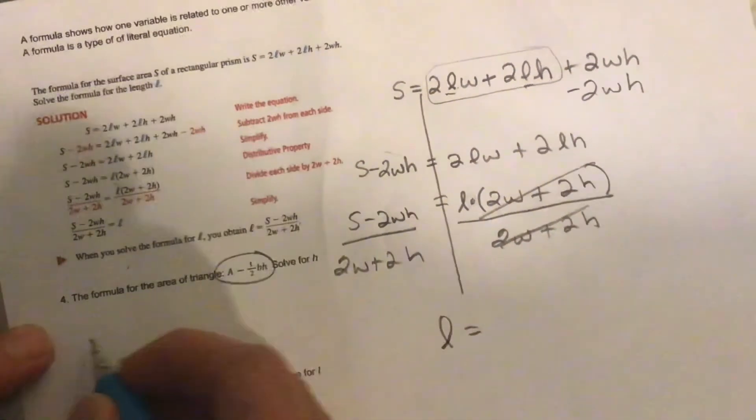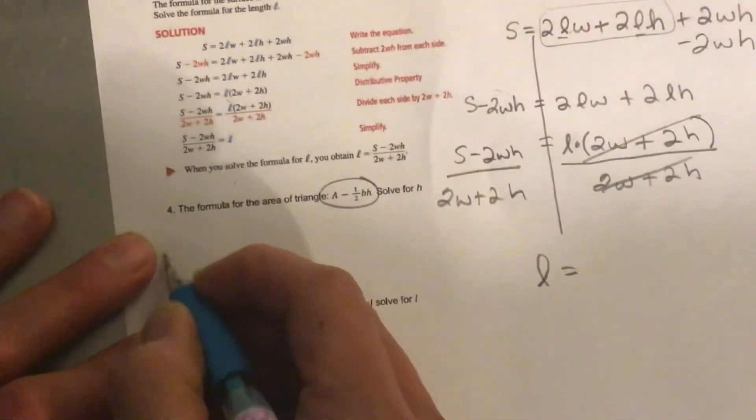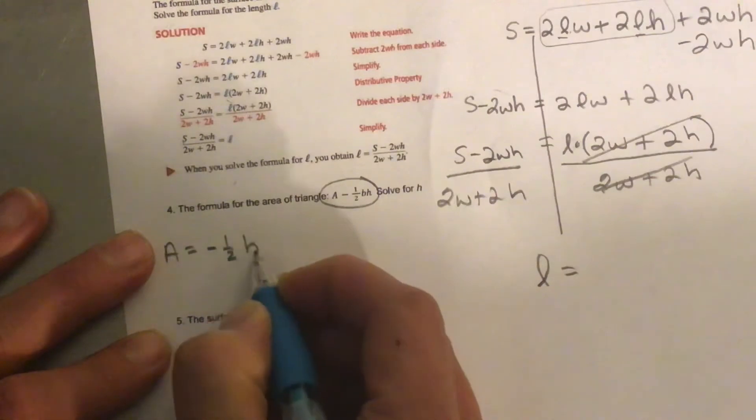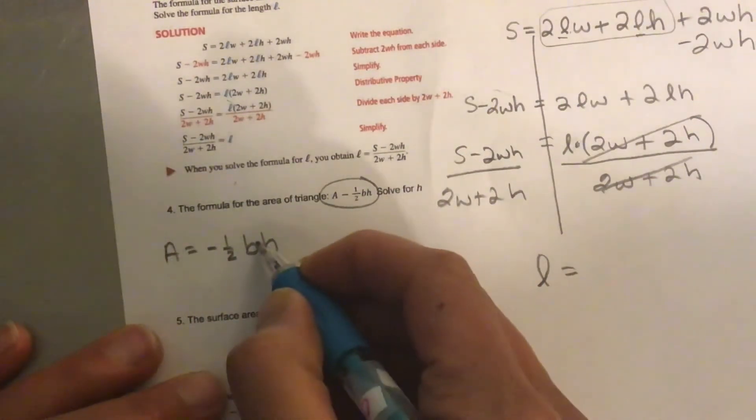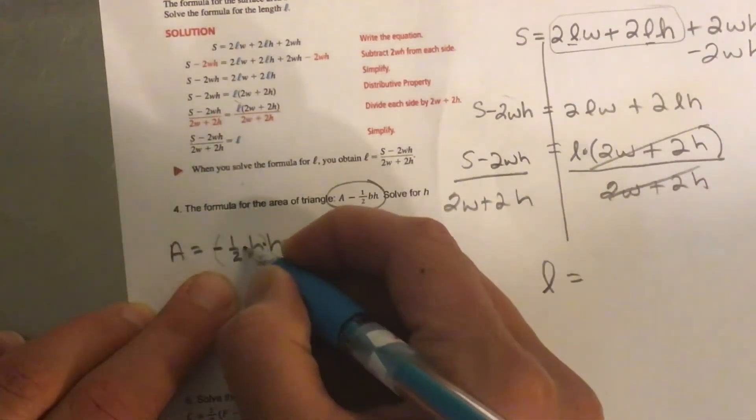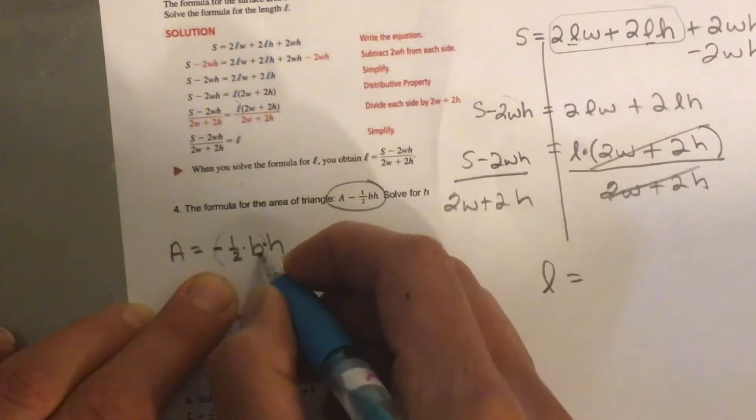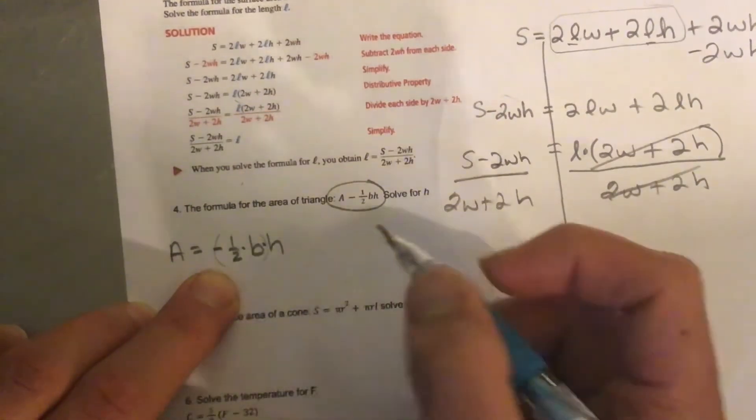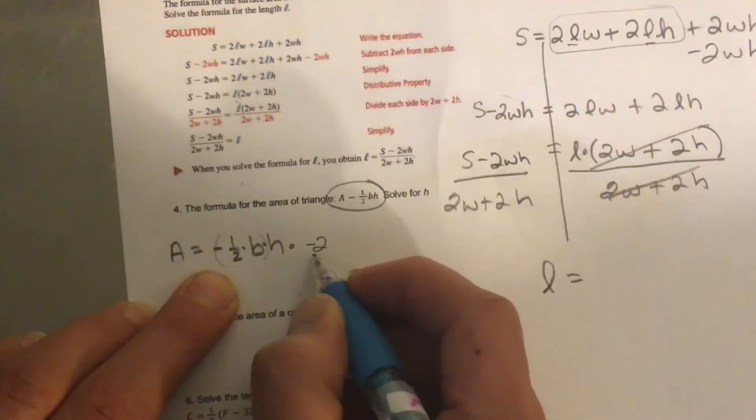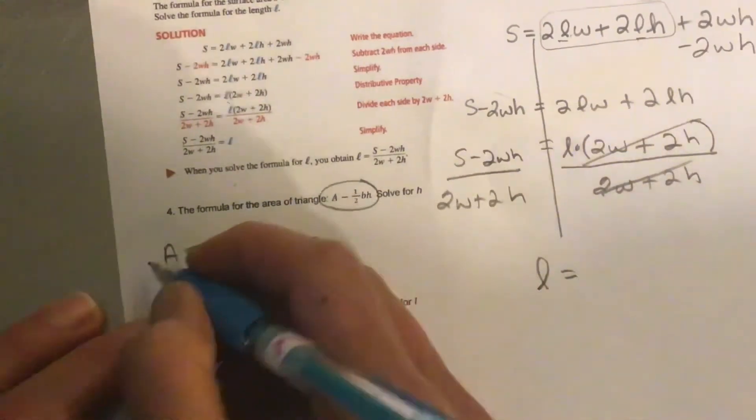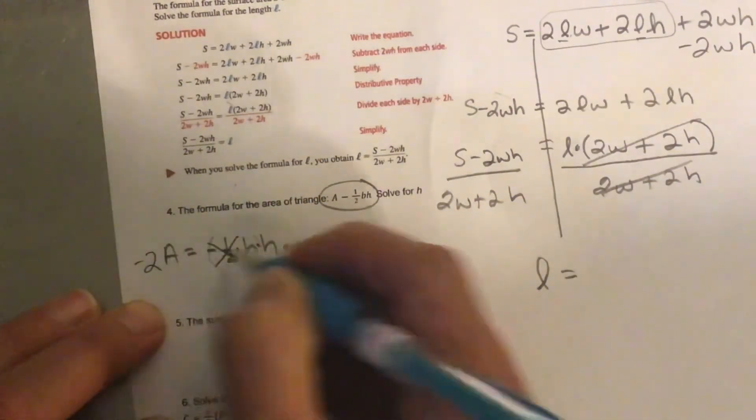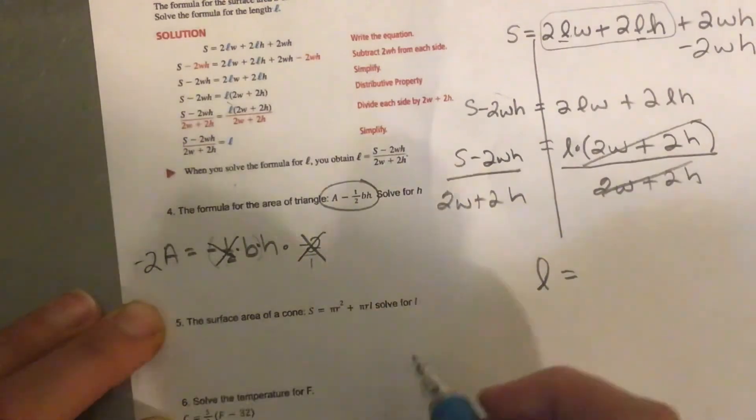All right. So we want to solve for H here. I'm going to make it a little bigger. A equals negative 1 half base times height. So height's not alone, but I can't really move those together because of that fraction. So we're multiplying because the opposite of multiplying B is dividing, but the opposite of multiplying a fraction is multiplying by the reciprocal. So negative 2 over 1, which is just negative 2. And if I multiply that side, then I multiply this side. So those cancel.